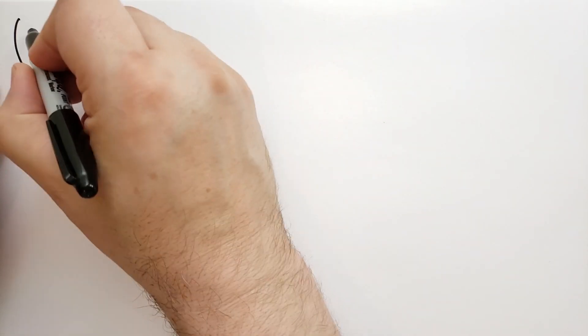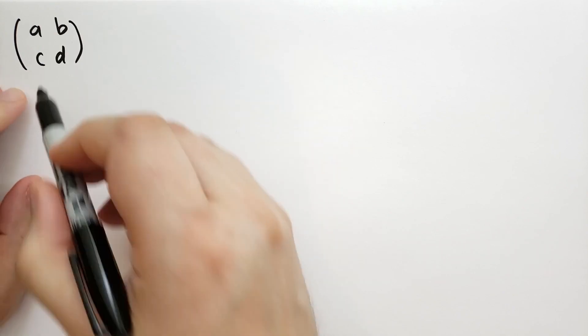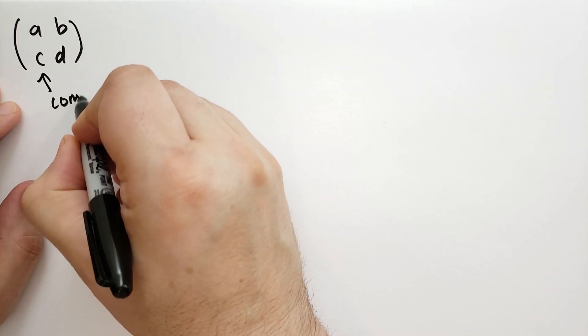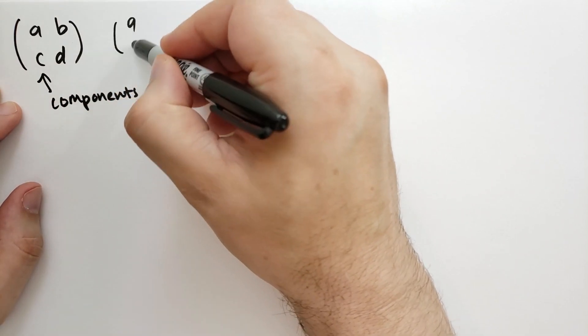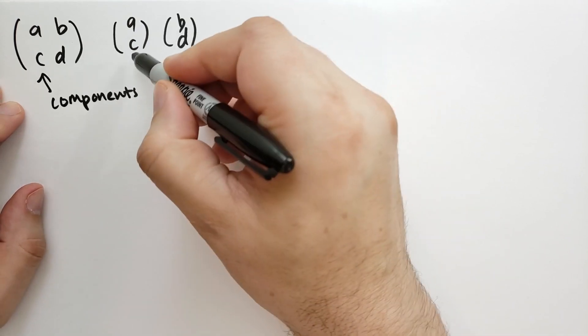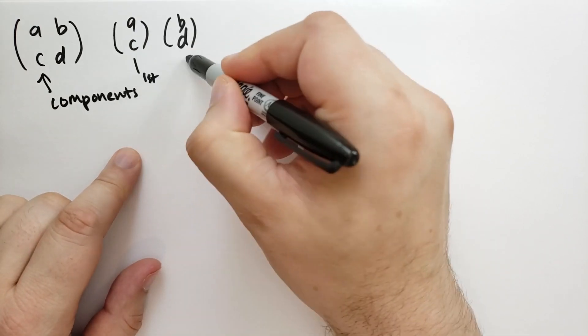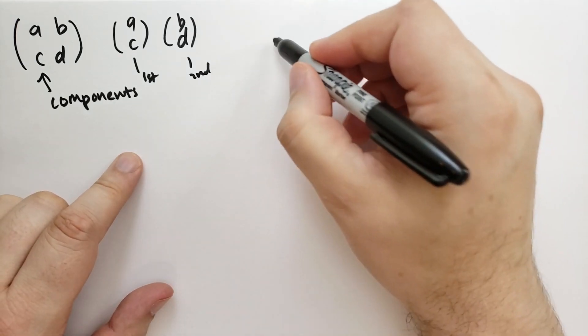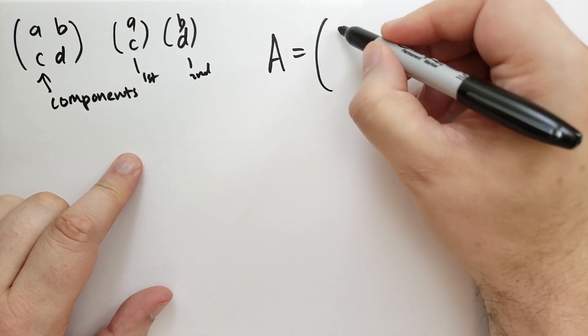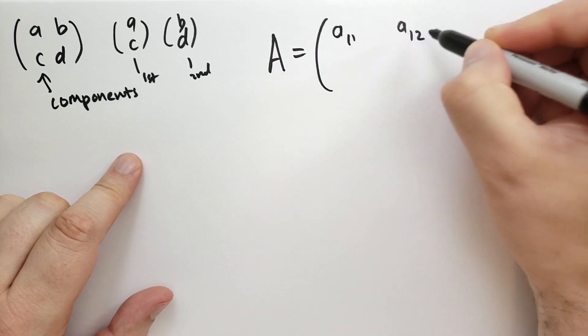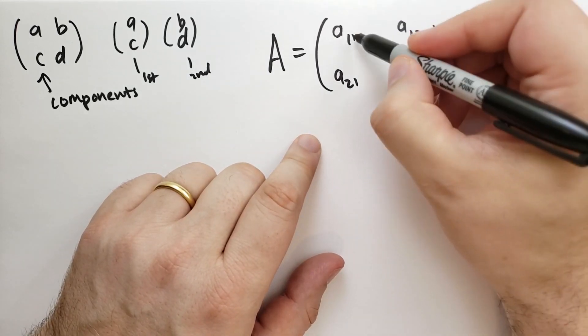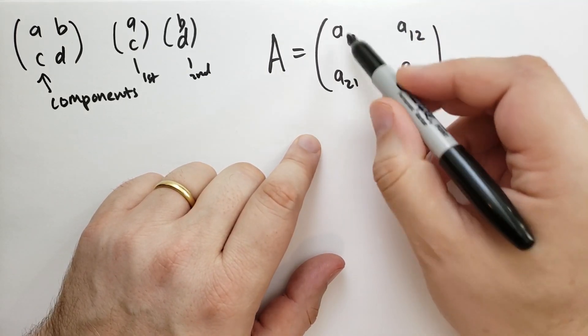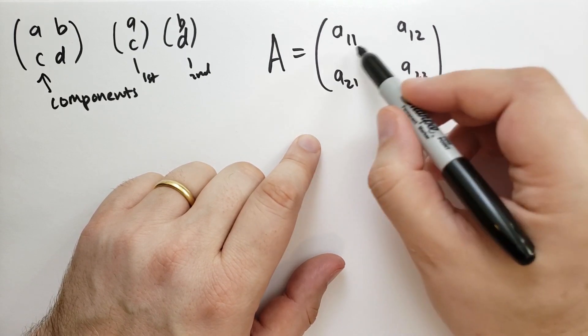Let's talk about notation. When we have a matrix, in this case a 2 by 2 matrix with 4 things inside of it, these things we call components. We have two column vectors A, C and B, D. We're going to call this one the first and this one the second. In general when we have a matrix A, we're going to note this in this style: a11, a12, a21, and a22. The first number in the subscript tells you which row you're on, and the second number tells you which column you're in.